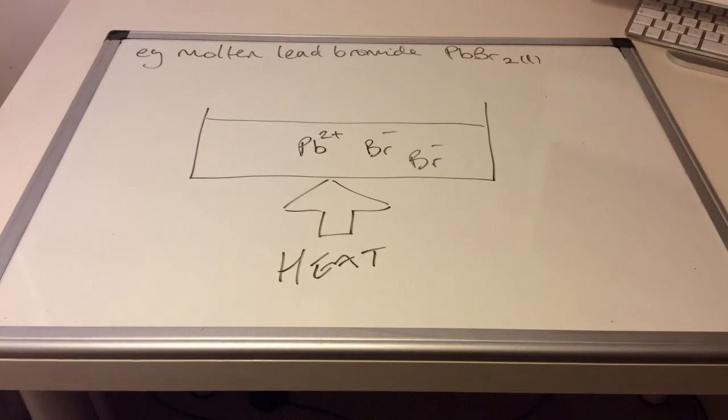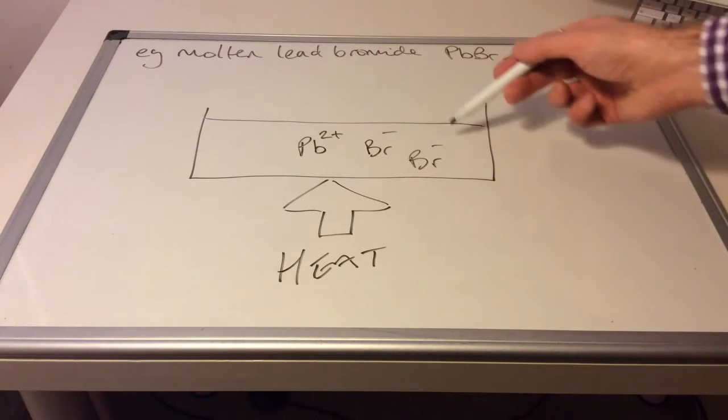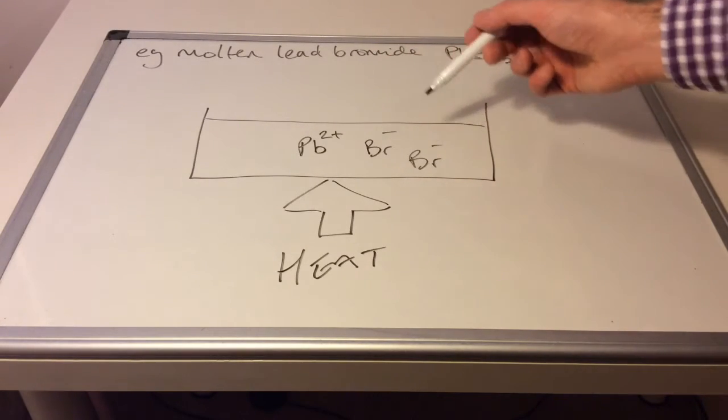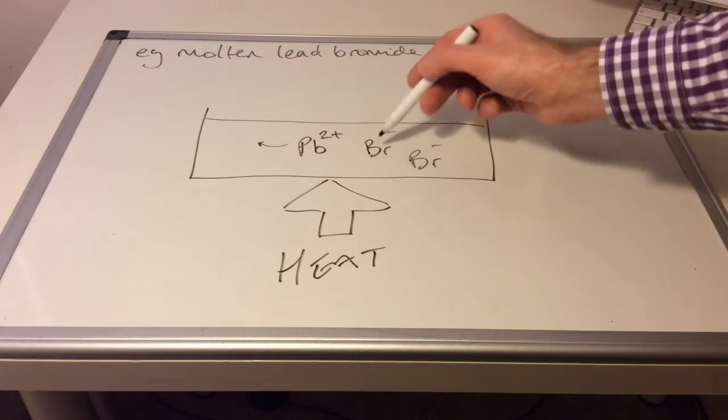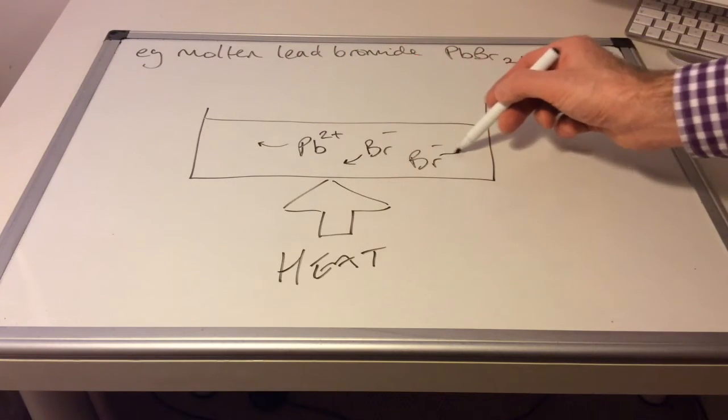It's going to melt so you can see the state symbols change to L now. And what that's going to do is it's going to mean that the ions are no longer bound together attracting each other. They've broken free from the ionic bond, the attraction. And they are freed up as the ions now. And obviously because they're freed up, they can move around.